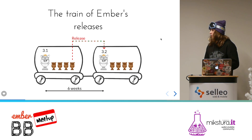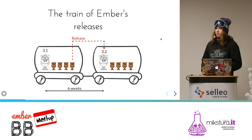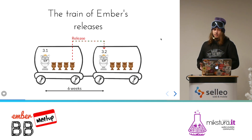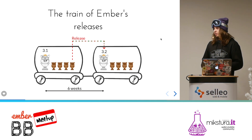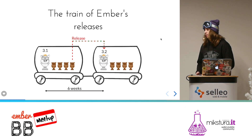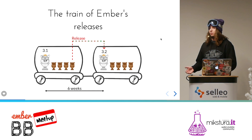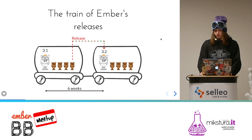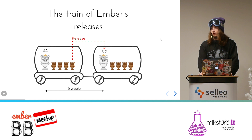If some features aren't ready for deployment, they are postponed to the beta. The stuff that is done is released and the other stuff is postponed. Every six weeks we have this release. It's called the train model.